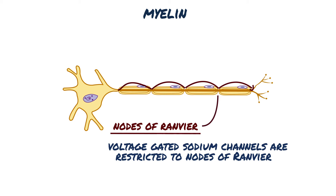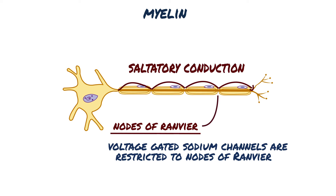Thus, the time-consuming process of opening and closing of ion channels occurs at only a limited number of positions along the axon. This mechanism for action potential propagation is called saltatory conduction, because the action potential appears to jump along the axon from node to node. Thanks to saltatory conduction, conduction is faster in neurons with myelin.